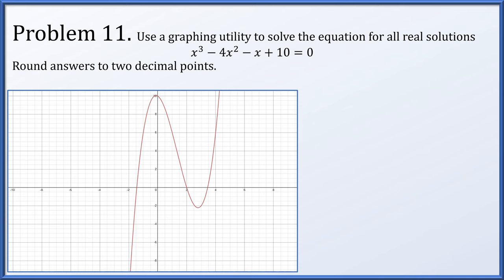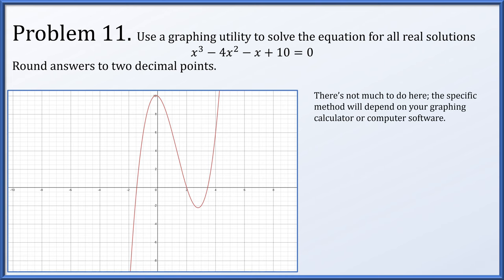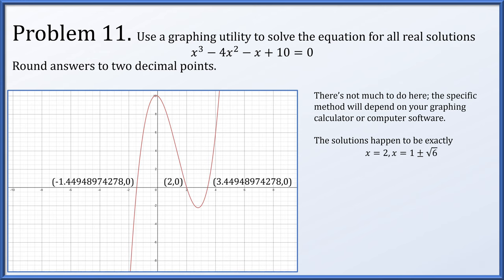In problem 11, we use a graphing utility to find all real solutions to x cubed minus 4x squared minus x plus 10 = 0. Using calculator or computer software to produce the graph, the solutions are exactly 2 and 1 plus or minus root 6, which as decimal approximations are 2, negative 1.45, and 3.45 roughly. There is a way to find exact solutions, but we were not asked to do that.